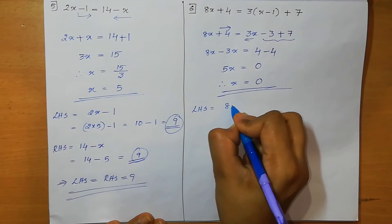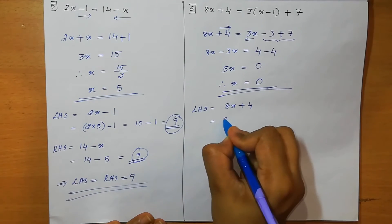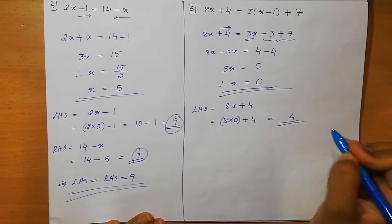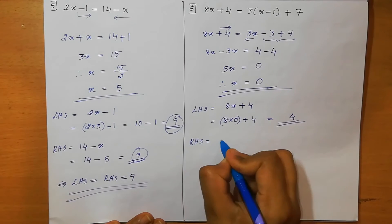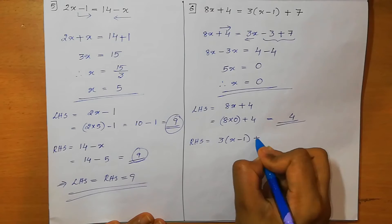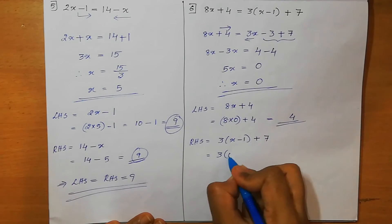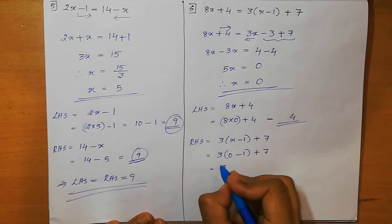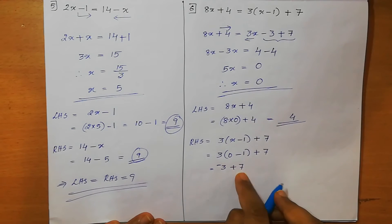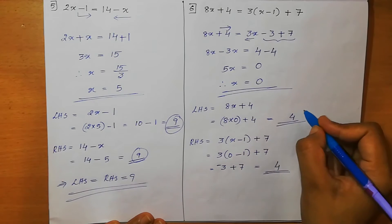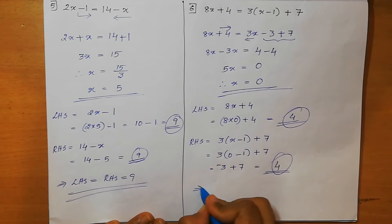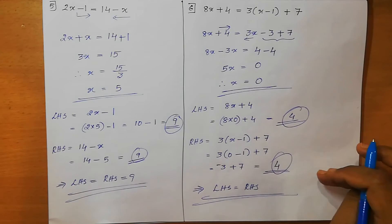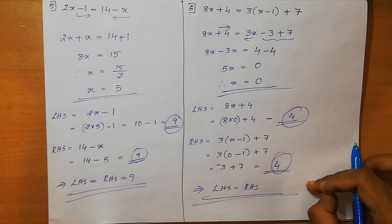We verify: LHS = 8x + 4 = 8 × 0 + 4 = 0 + 4 = 4. RHS = 3(x minus 1) + 7 = 3(0 minus 1) + 7 = 3 × (minus 1) + 7 = minus 3 + 7 = 4. LHS = RHS = 4. Hence verified, so x = 0 is correct.